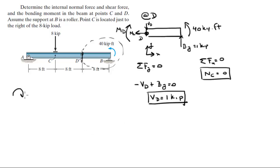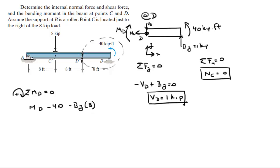Assuming clockwise is positive, the sum of the moments at D equals 0. The moment minus the 40 kip-foot moment at the far right, minus the moment created by BY — which is 1 kip times 8 feet (the distance from D to BY) — all equals 0. The bending moment at D equals 48 kip-feet, clockwise.